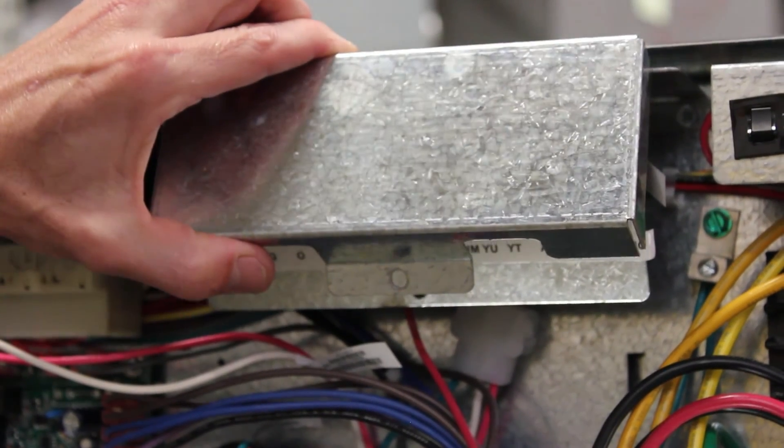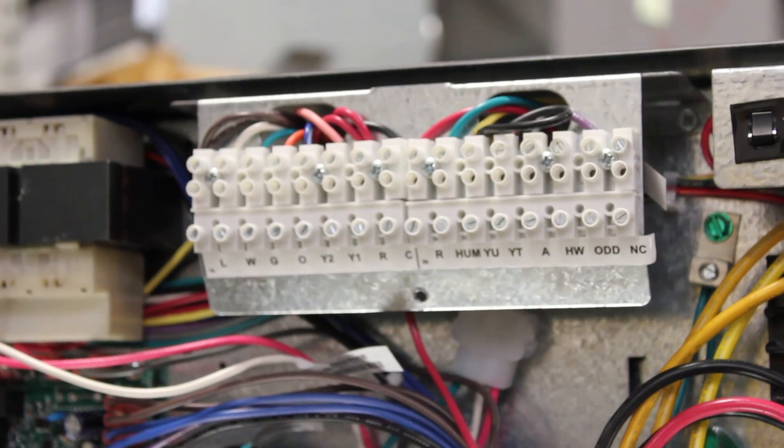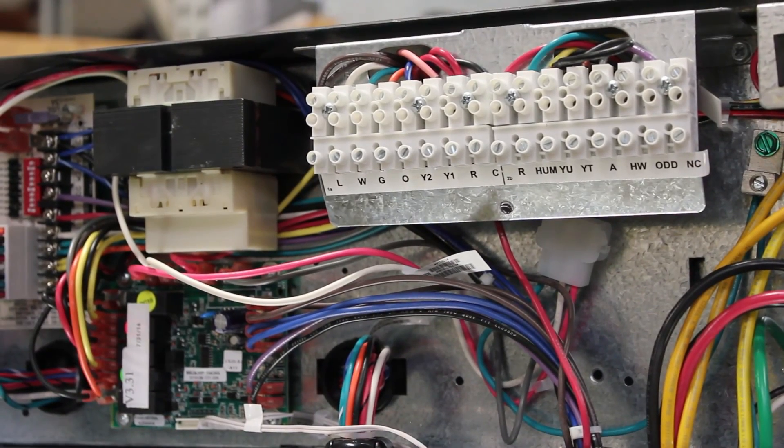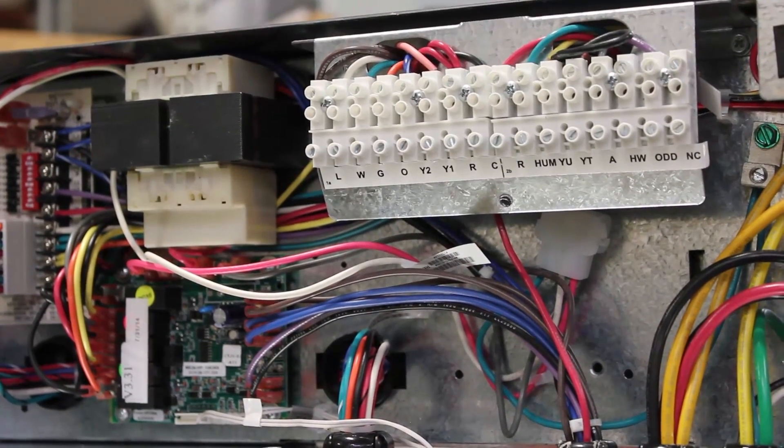The low voltage terminal strip is covered by a UL required low voltage cover. Remove the cover to access the thermostat connections and reinstall. For more information please refer to the installation manual and thank you for watching our YT unit installation video.